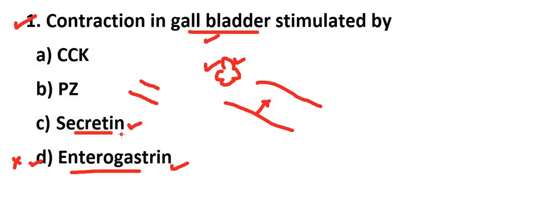So option C is not possible here. Option B is PZ, pancreozymin. Pancreozymin is a hormone that stimulates the pancreas to secrete its enzymes and juices. So this is also not the right answer for gallbladder contraction.